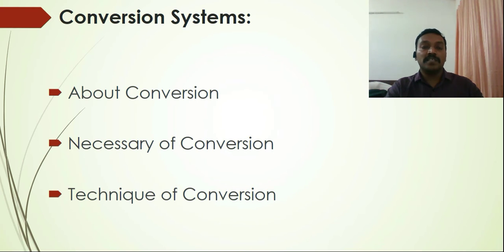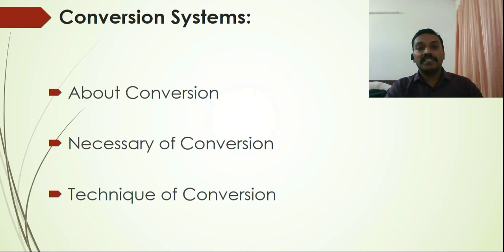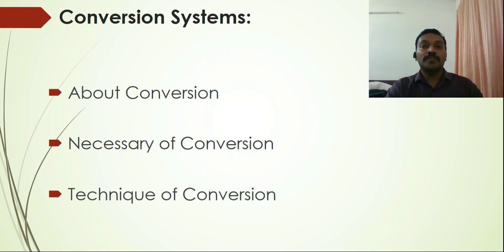Once we find that a particular system is not suitable for particular crops, conversion becomes necessary. Switching from one system to another is not easy — instead of converting the whole area at once, only certain pockets or parts of the area are selected first, and then the remaining areas are slowly included in the new system. We will study the necessity and techniques of conversion.